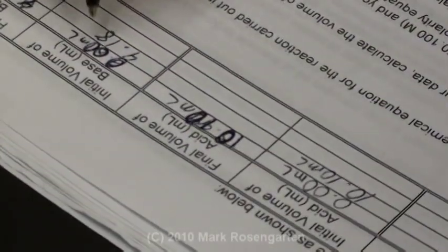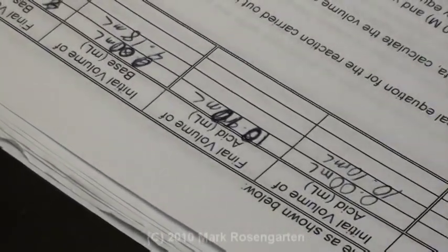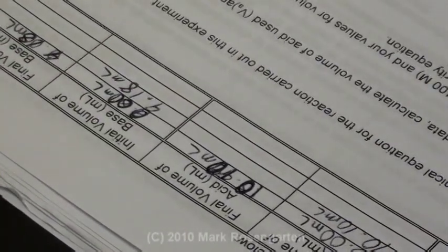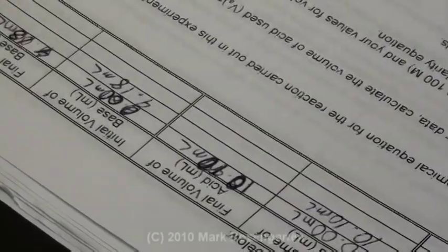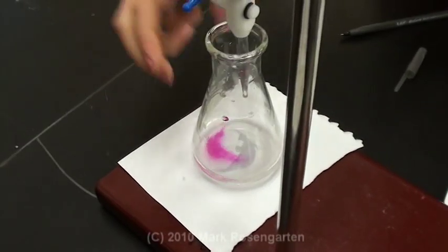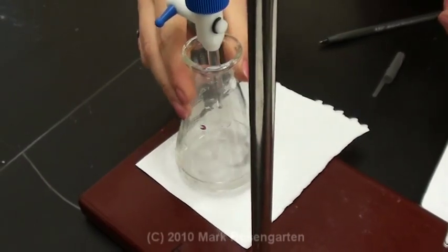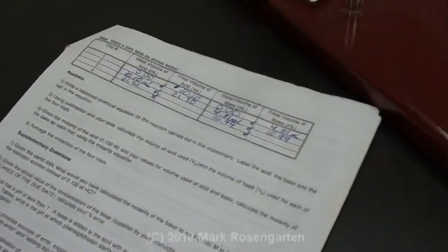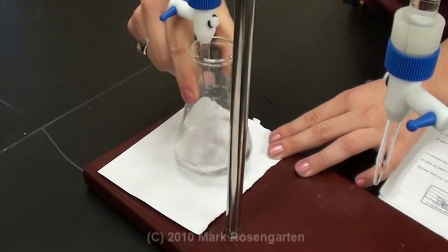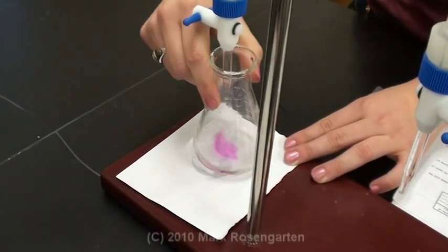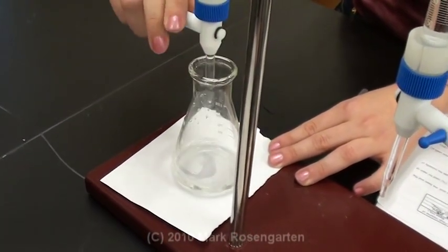So your final volume was 10.10 milliliters. You'll drain it out until it reads 20.10 milliliters. And then repeat the process until you have data for four trials, and the data gradually builds up. You'll find that as you do it more and more, your technique will continue to improve.